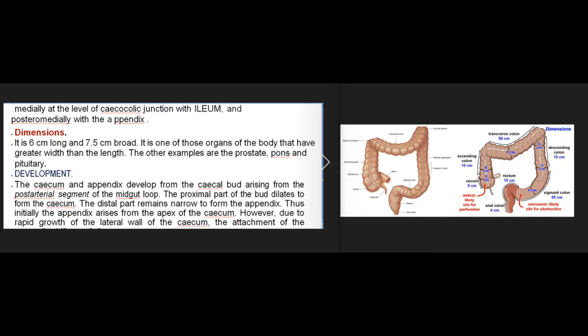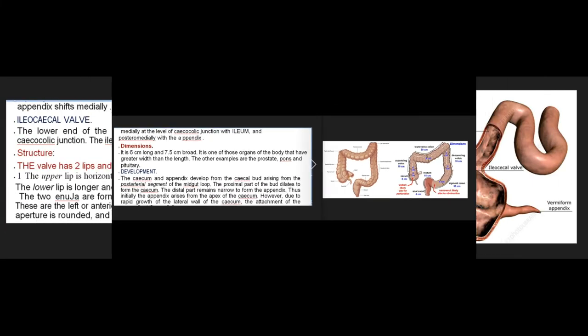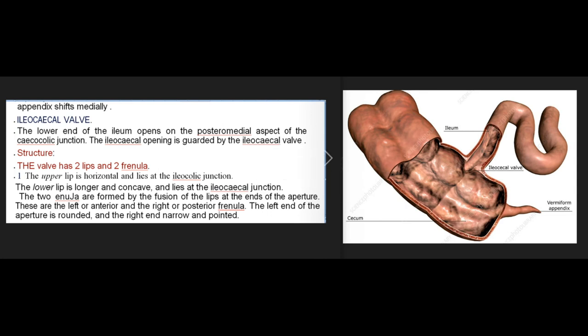The cecum is one of those organs with greater width than length, like the prostate, pons, and pituitary. The cecum and appendix develop from the cecal bud arising from the post-arterial segment of the midgut loop. The proximal part of the bud dilates to form the cecum; the distal part remains narrow to form the appendix. Initially the appendix arises from the apex of the cecum, but due to rapid growth of the lateral wall of the cecum, the attachment of the appendix shifts medially.